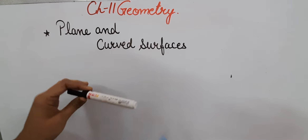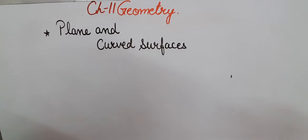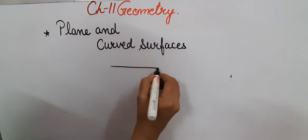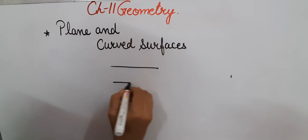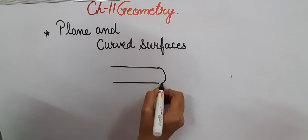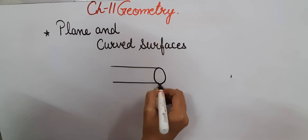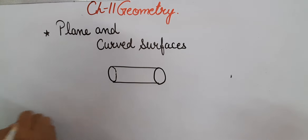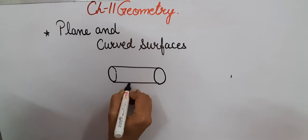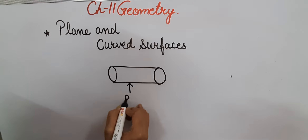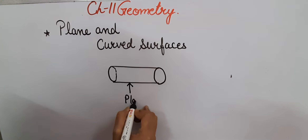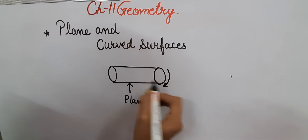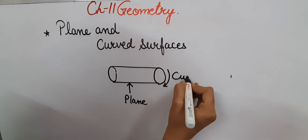It comes under the curved surface. To understand it more, if I draw a cylindrical shape, this surface on the flat end is a plane surface, and the surface which is turning around is the curved surface.